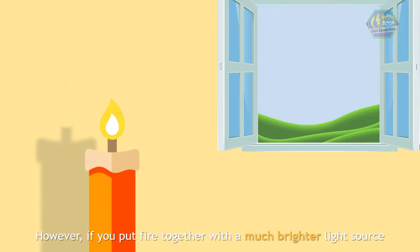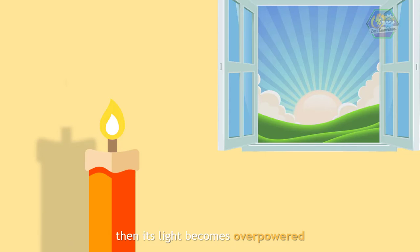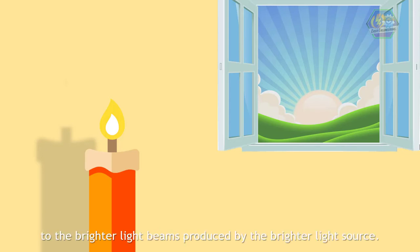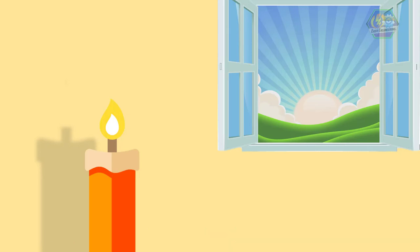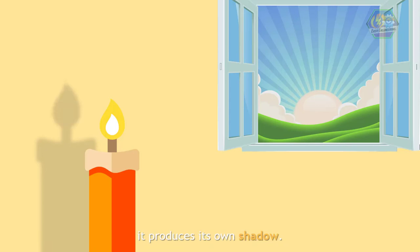However, if you put fire together with a much brighter light source, then its light becomes overpowered. The fire becomes an obstruction to the brighter light beams produced by the brighter light source, and since fire acts as an obstruction, it produces its own shadow.